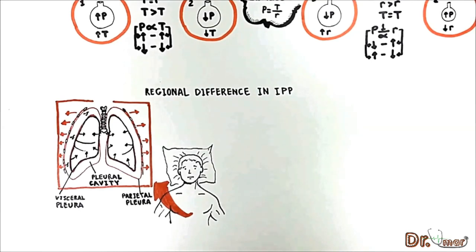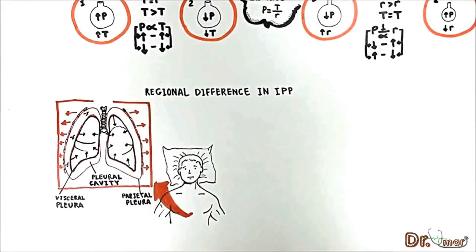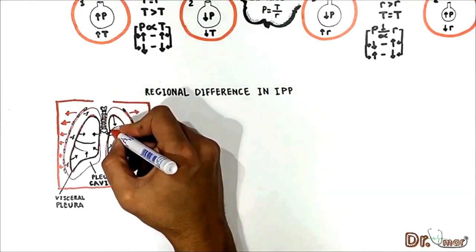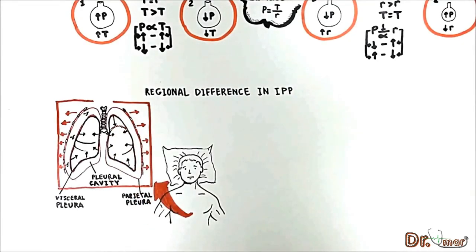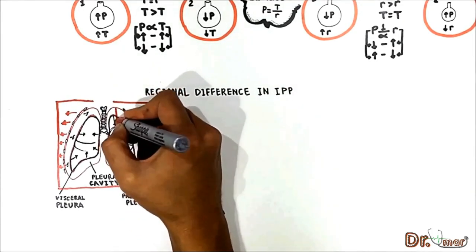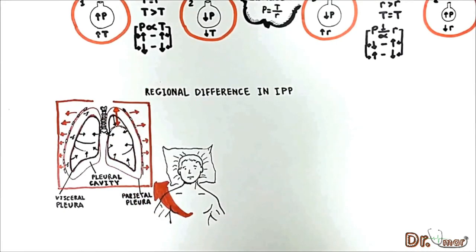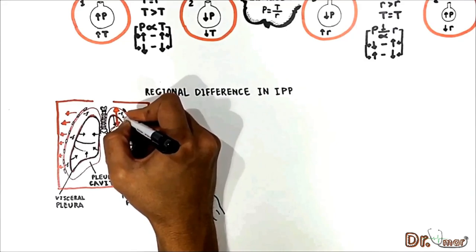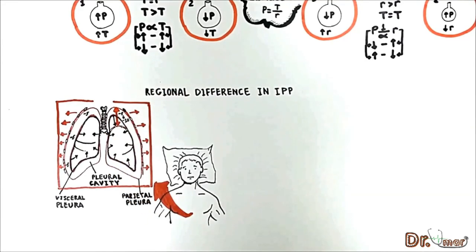Here is a question: how can one decrease intrapleural pressure, suppose in the apical region, experimentally? In order to make the intrapleural pressure even more negative in the apical region, you would pull this region inward farther, trying to collapse it further. As a result both pleura separate from each other in the apical region, and the intrapleural pressure becomes even more negative — suppose dropping from negative 5 to negative 10 cm water — while the other regions remain at negative 5.